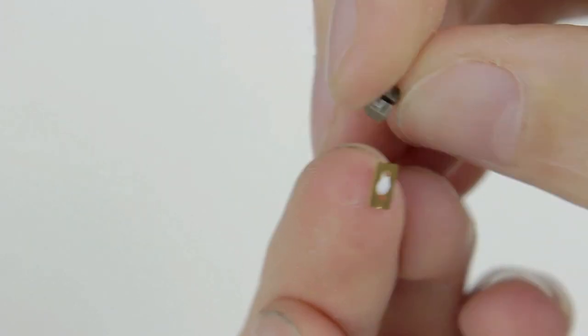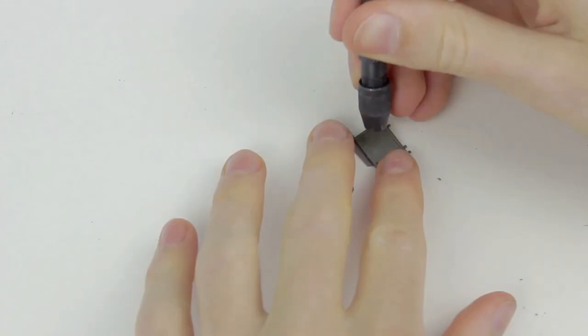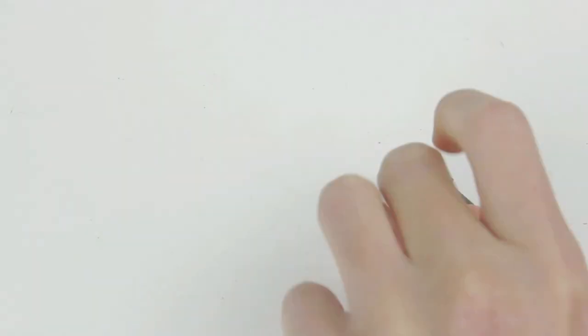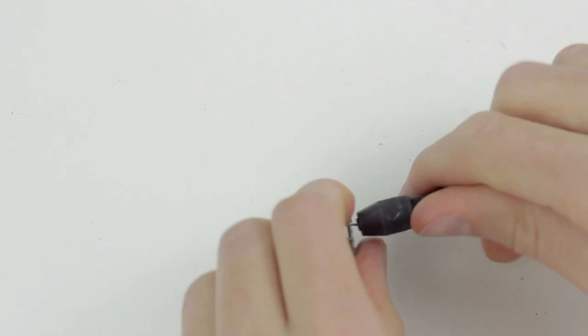I attached photo etch parts with PVA glue. I would definitely recommend getting some good modeling tweezers for this kit as I struggled with my cheap rubbish ones.